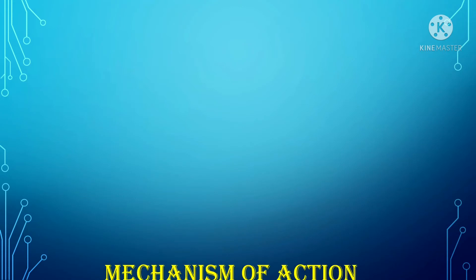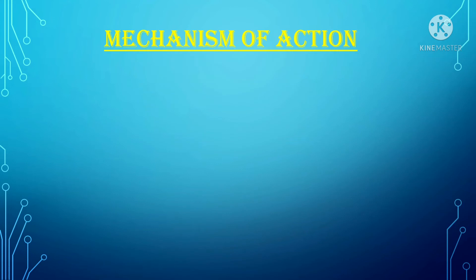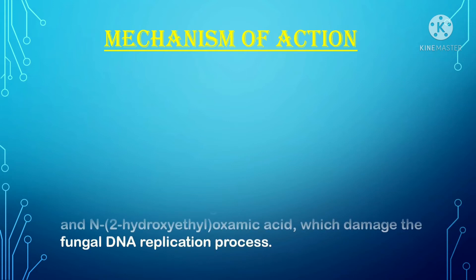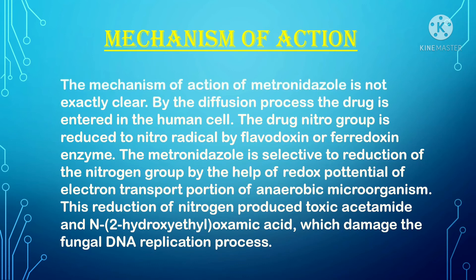Now, the important mechanism of action of metronidazole. The exact mechanism of action of metronidazole is not clear. By the diffusion process, the drug enters the cell. The drug's nitro group is reduced by the flavodoxin enzyme. Metronidazole is selective to reduction of the nitro group by the help of the redox potential of the electron transport portion of anaerobic microorganisms. This reduction produces toxic acetamide and hydroxyethyl oxamic acid, which damage the DNA replication process.